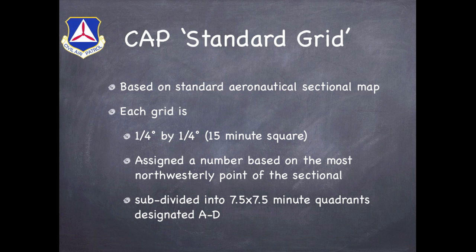For example, in the Denver sectional, there are 476 grids — that's 17 rows north and south, 28 columns east and west. Each one of these grids can be further divided into our standard 7.5 by 7.5-minute quadrant using the designators Alpha, Bravo, Charlie, and Delta.